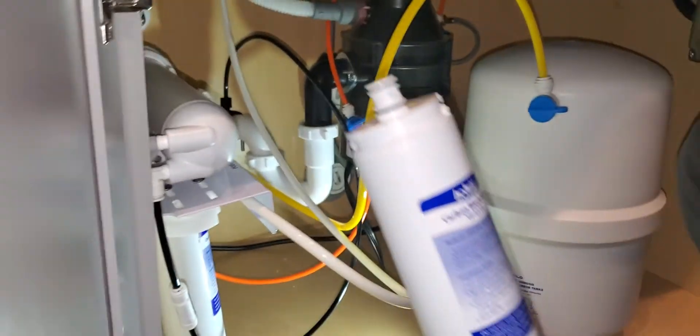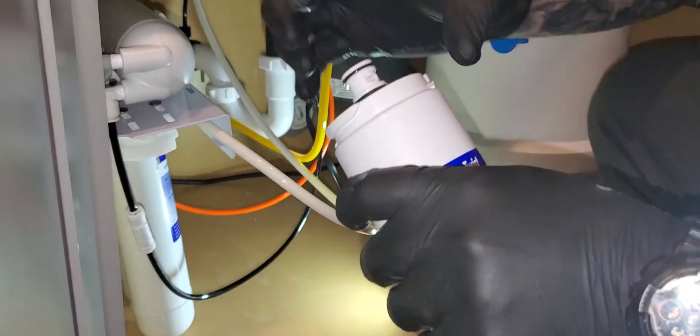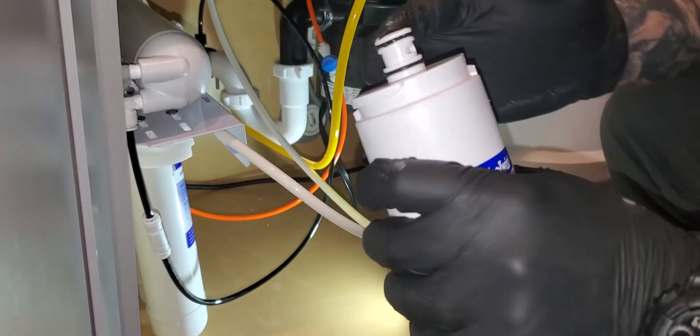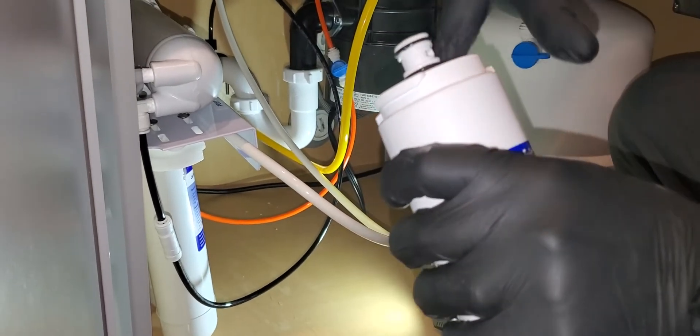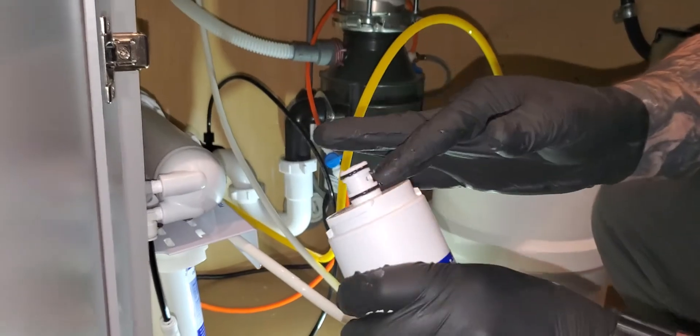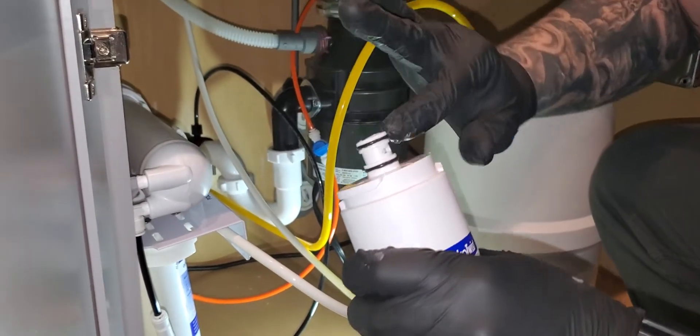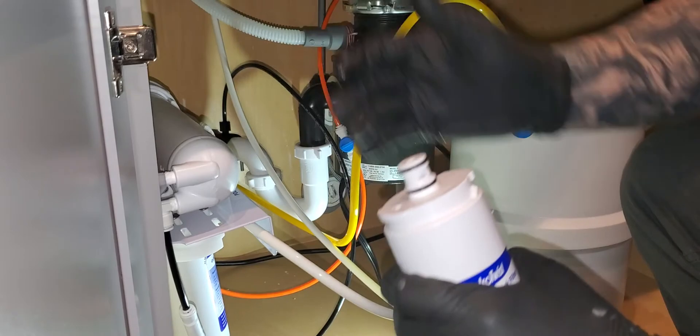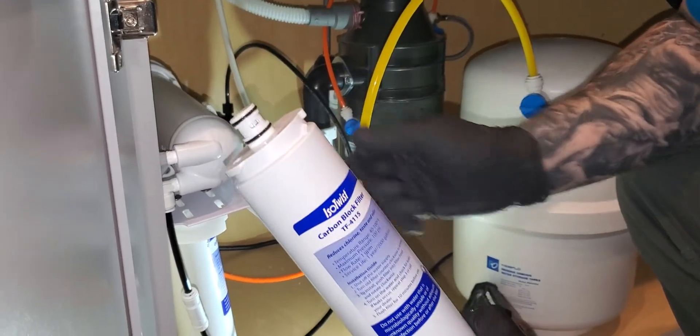Then you grab a little bit of lube and you're going to lube these black o-rings. You're going to get lube included in the package and that's what it's for. It's always a good idea to lube black o-rings for the reverse osmosis.